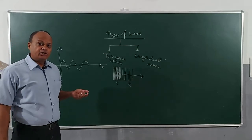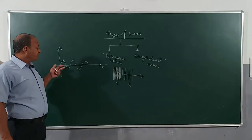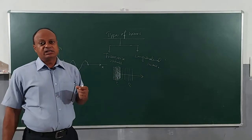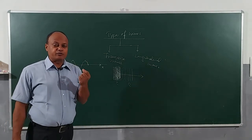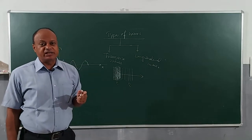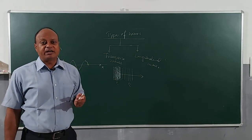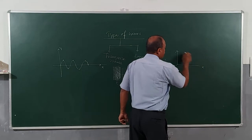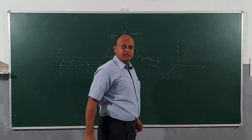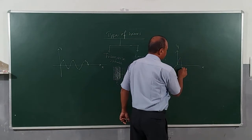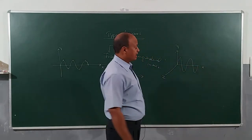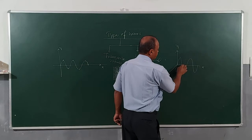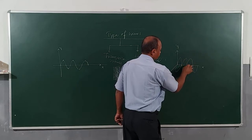Coming back to light - we know that light is constituted of these kinds of oscillations. Every time a charged particle is accelerated, it produces a photon, and there are two components in it. As you have already done, there is an electric field component and a magnetic field component. Looking at the axes - x, y, and z - we have the electric field and the magnetic field.